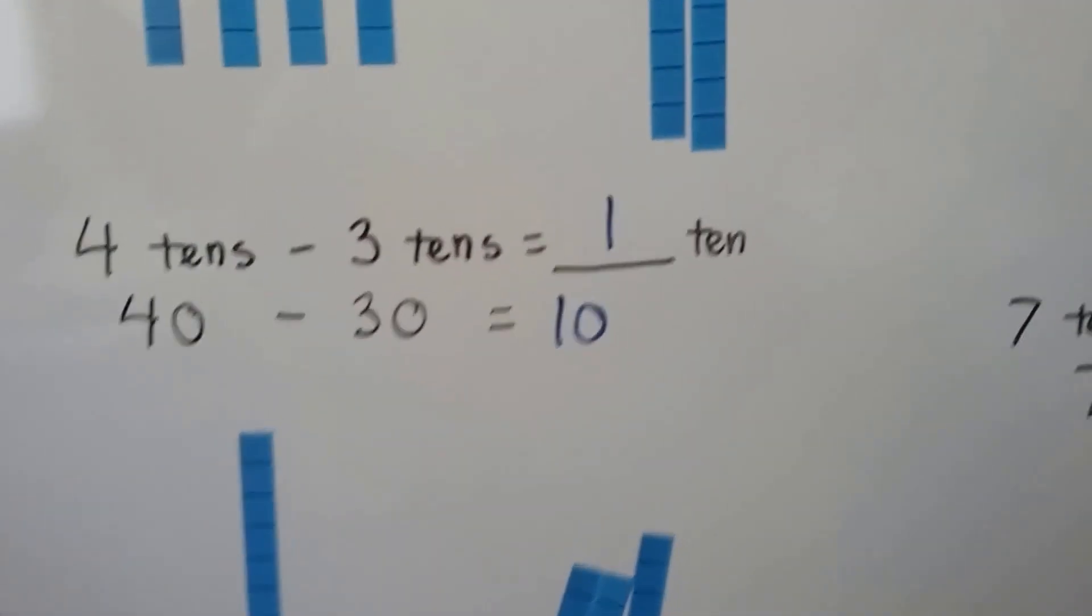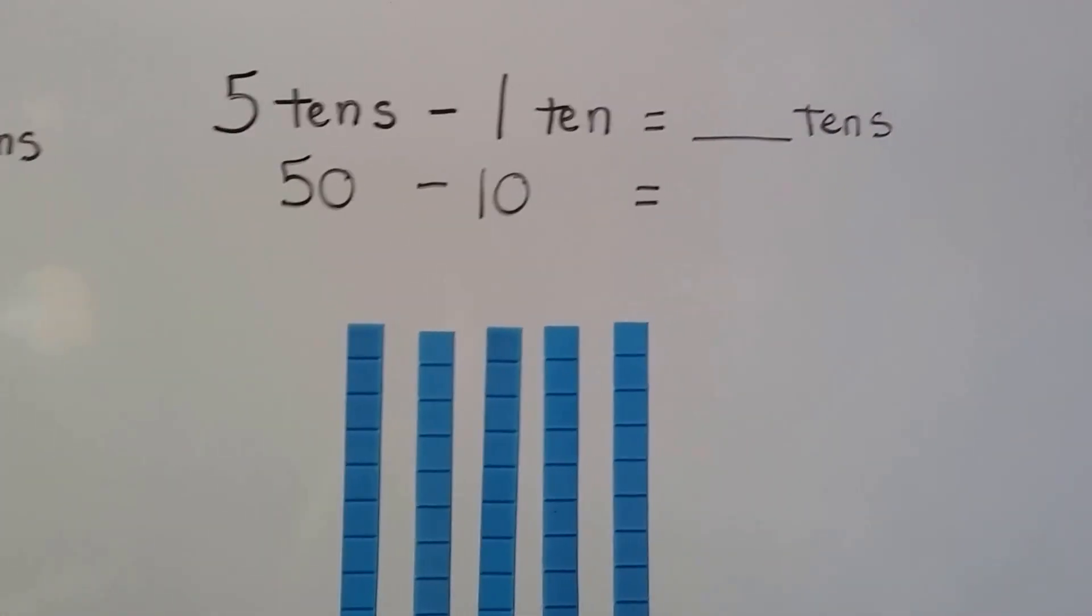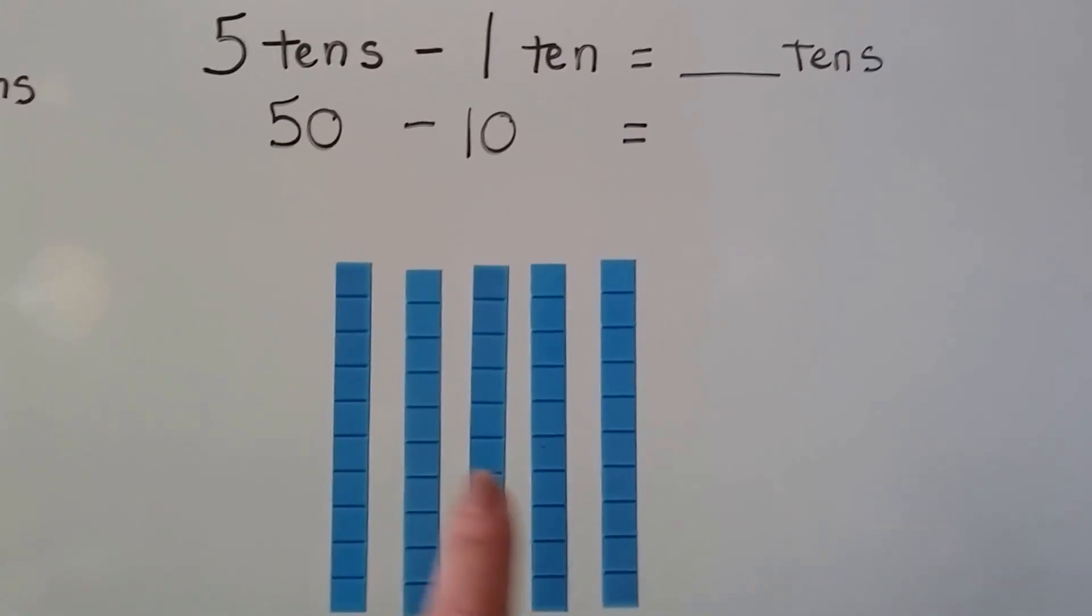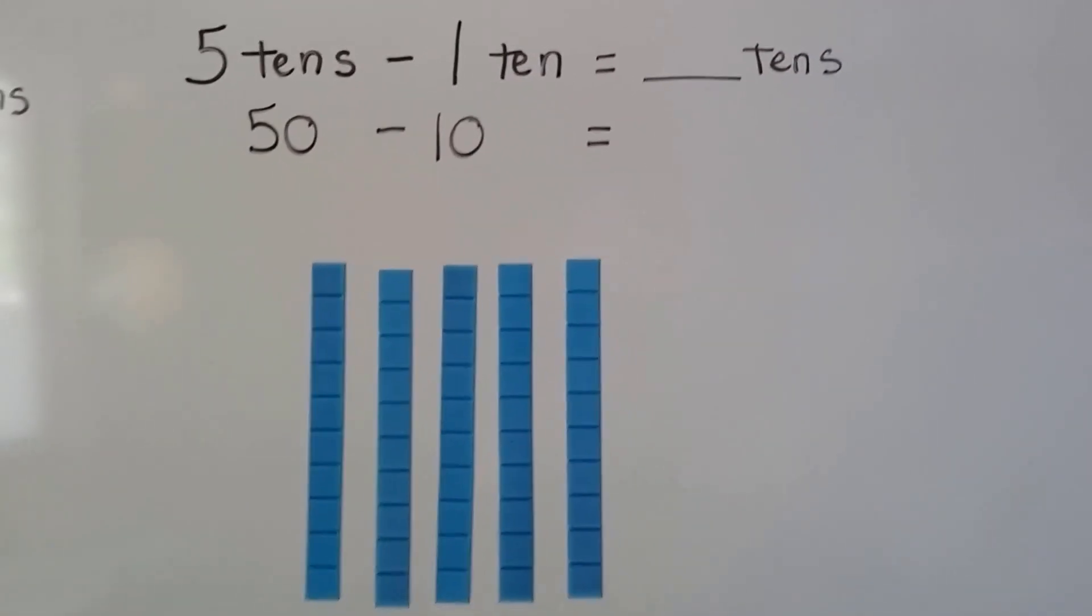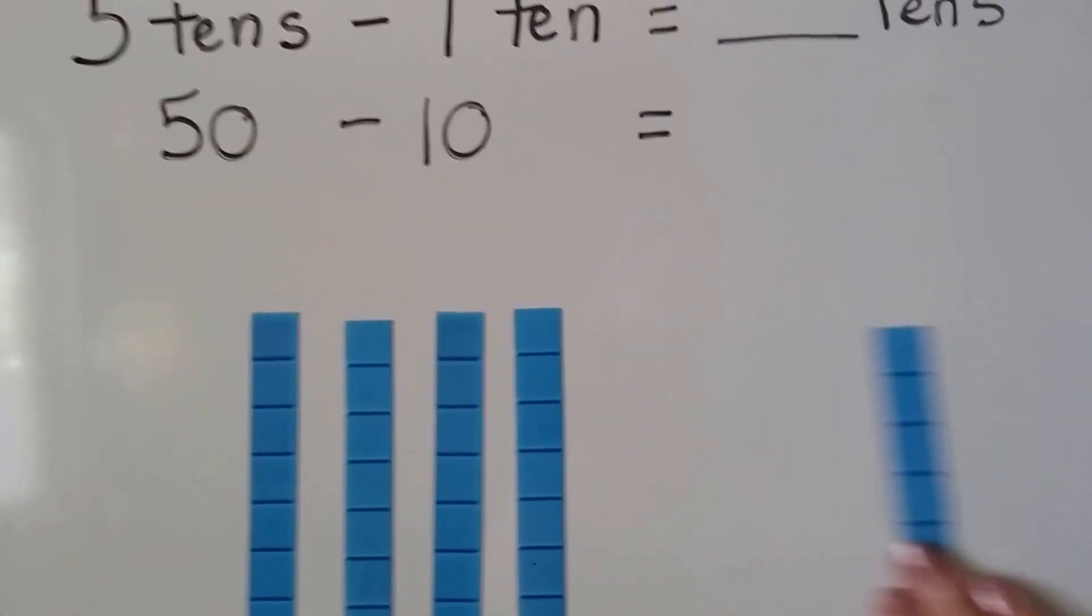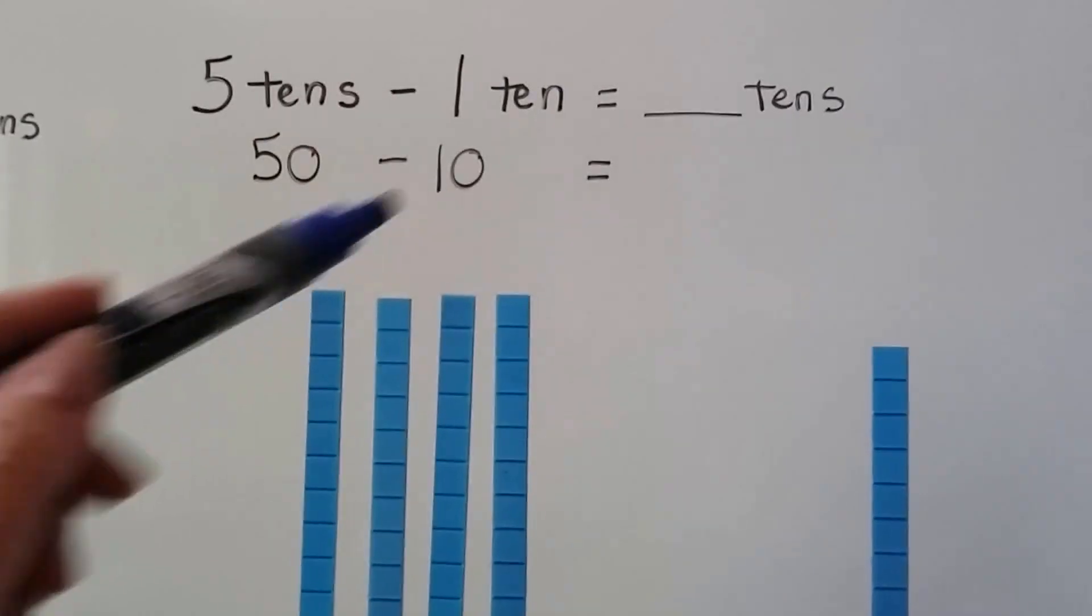Let's try another one. We've got five tens minus one ten. We have five tens here. We want to take away one ten. It's the same thing as fifty minus ten.